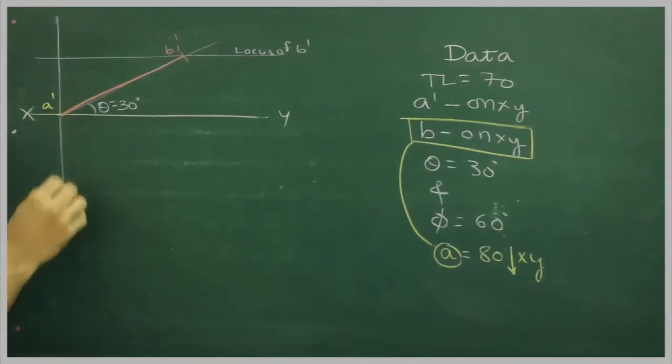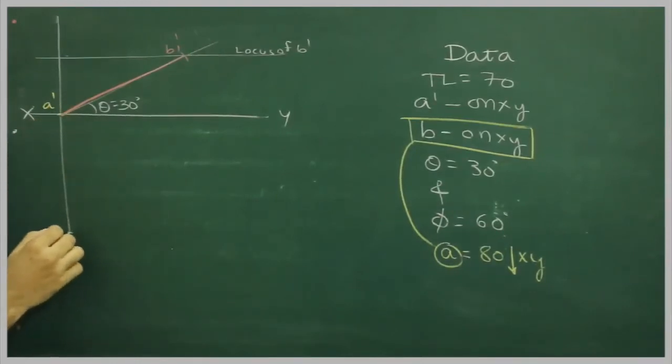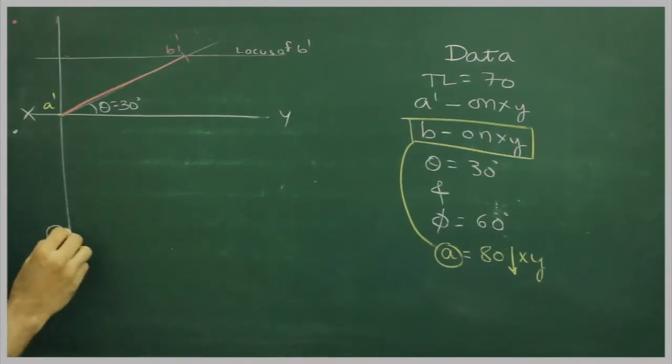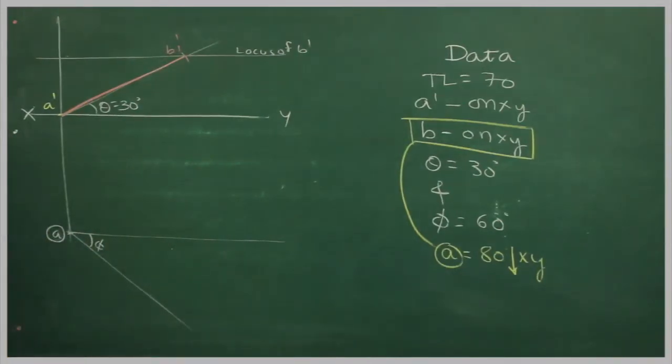So we will go down by 80, we will mark a, draw a horizontal line. And we have phi. We can draw phi. We will cut true length on it.